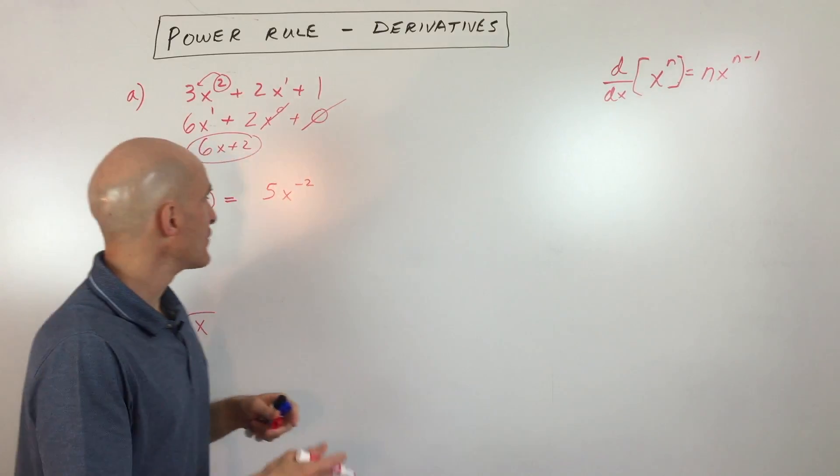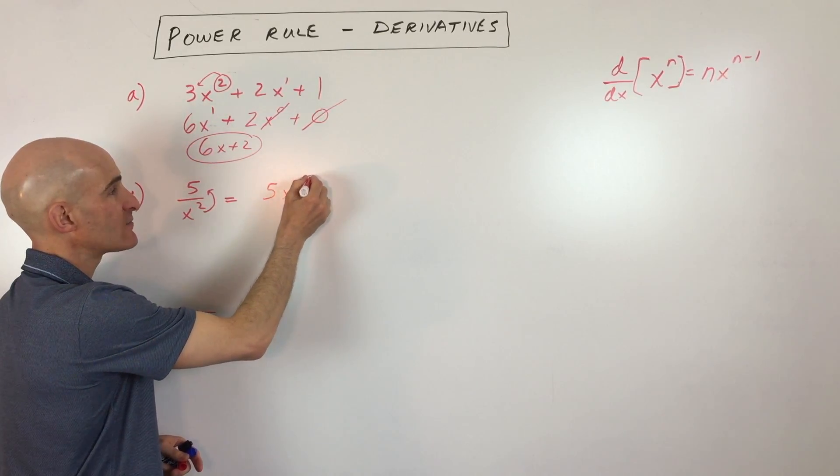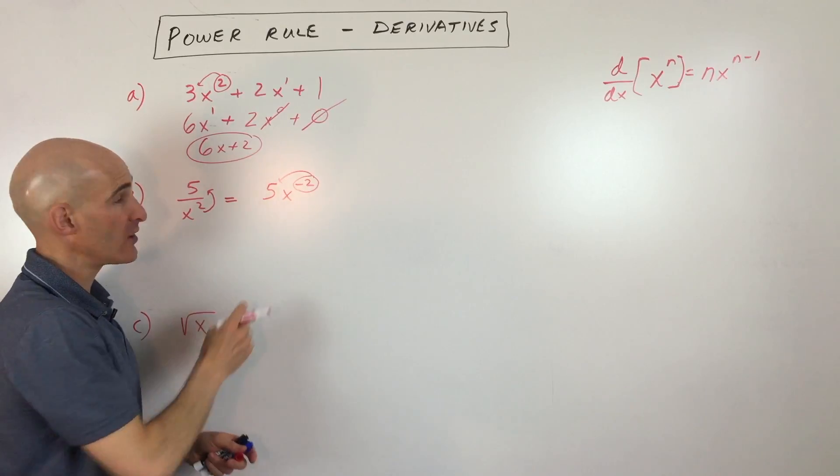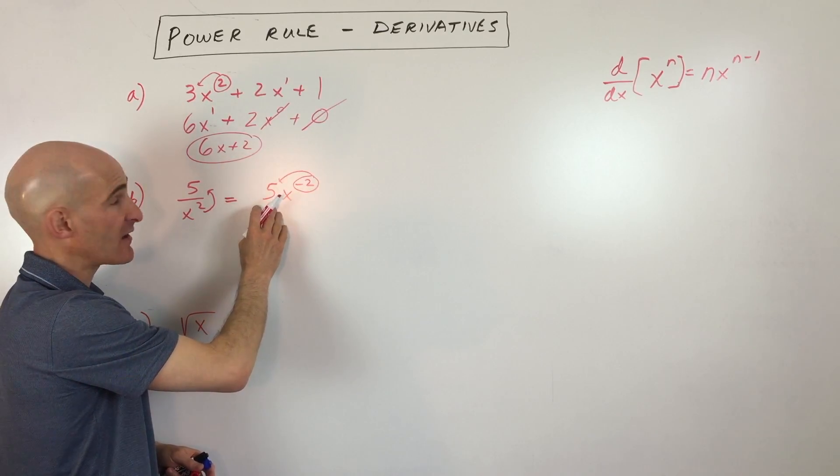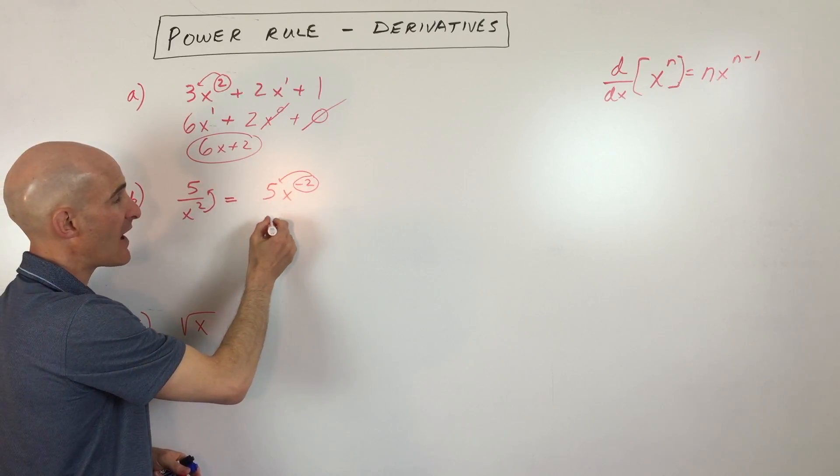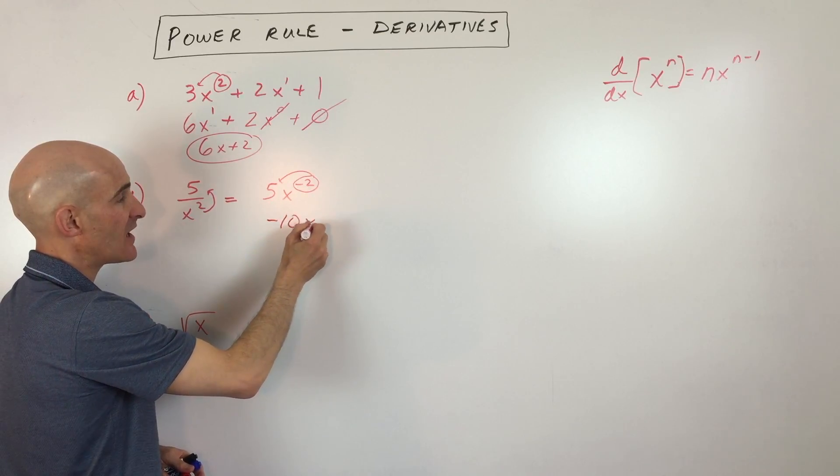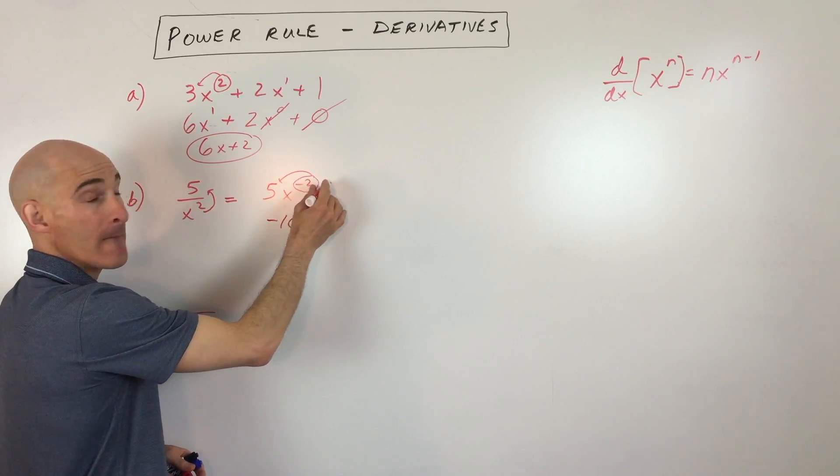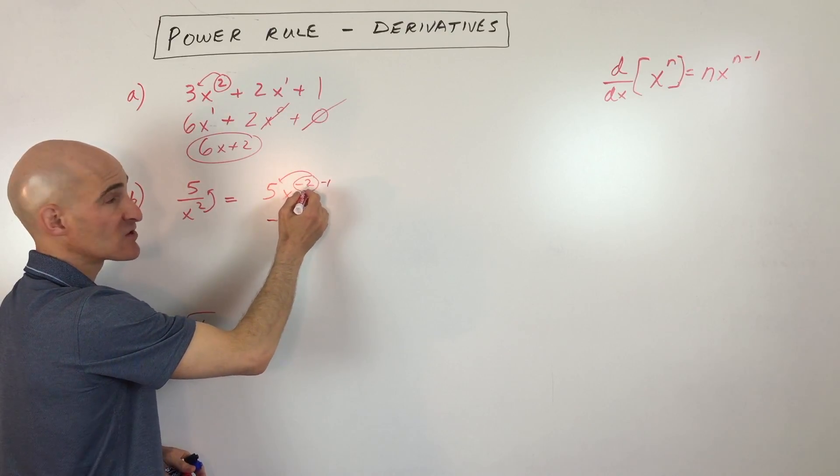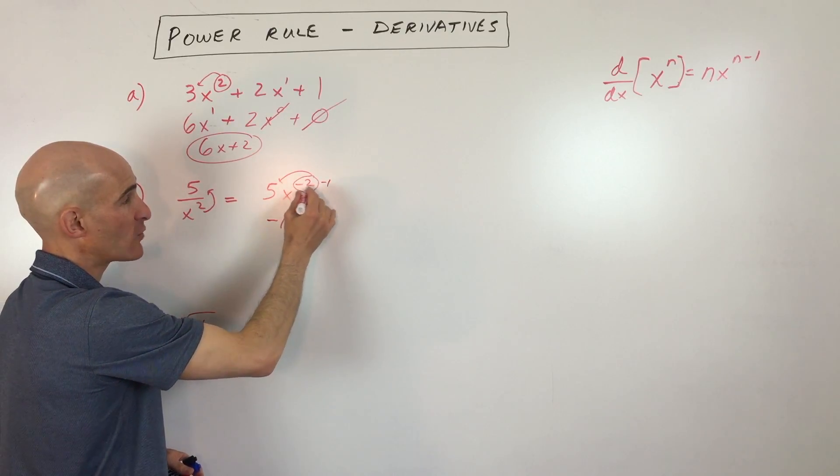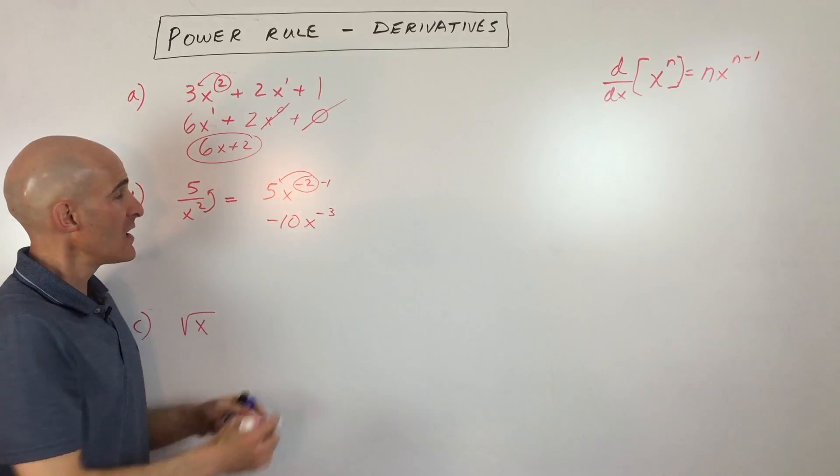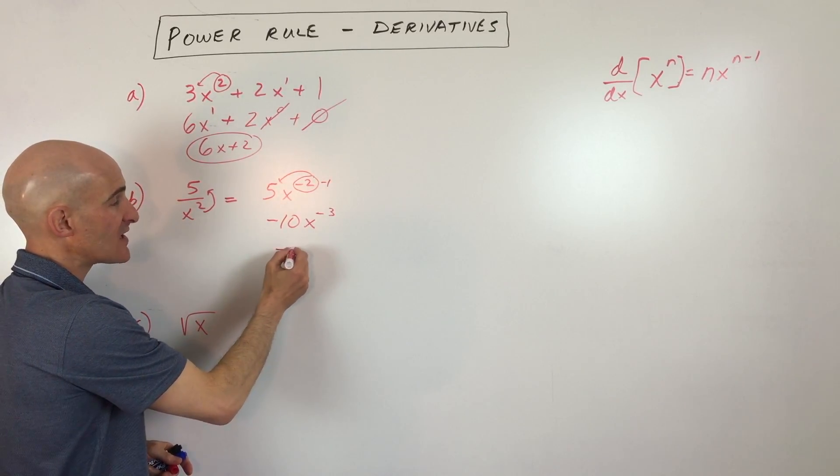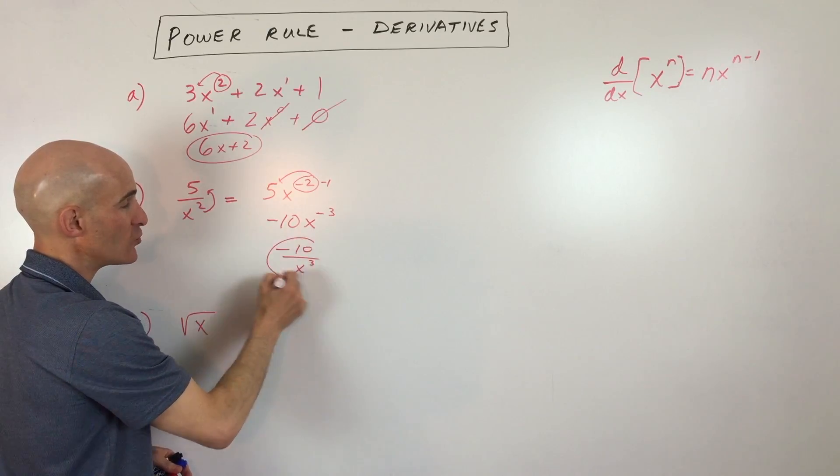And so now what we're going to do, we're going to take the derivative. So what we do is we take that exponent, we bring it down in front of the variable, in front of the base. There's a 5 there already, so by the constant multiple rule, we're just going to multiply by 5. That gives us negative 10x to the, now you want to subtract 1. Sometimes students get a little bit confused here, but you just want to subtract 1. So this is actually going to make it a larger number, but it's a larger negative number. And then we can finally rewrite this as negative 10 divided by x cubed.